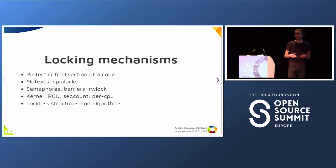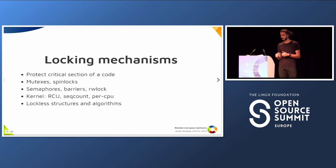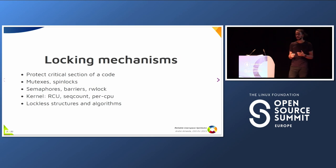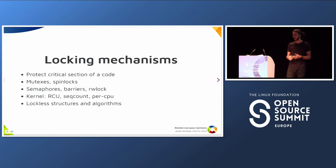But we also have semaphores, barriers, read-write locks. On the kernel side, we have a lot of different things like RCUs, seqlocks, per-CPU operations. And writing locks is so hard that we also have people who really try to avoid dealing with locks and create lock-less structures and algorithms.